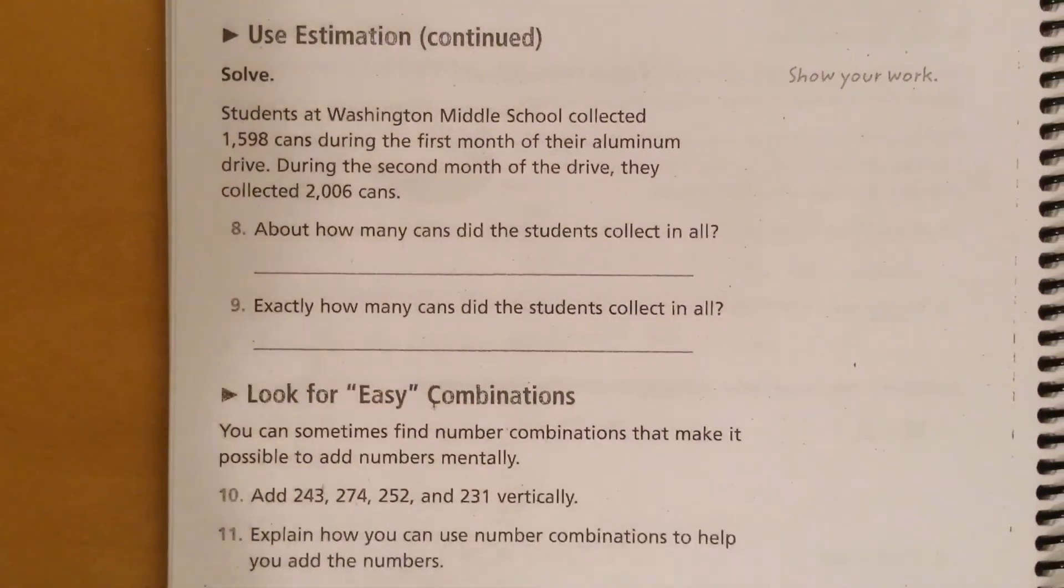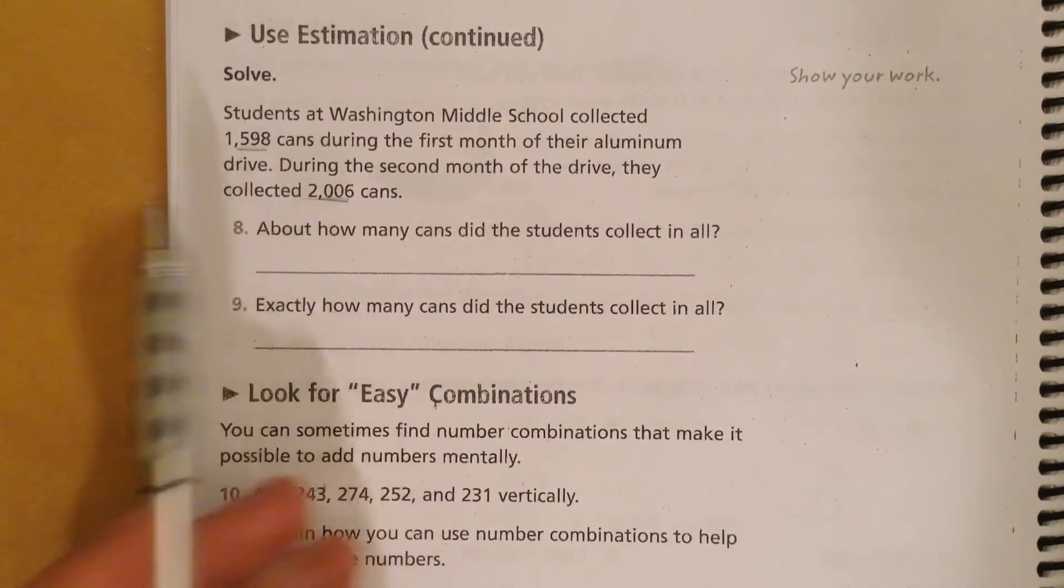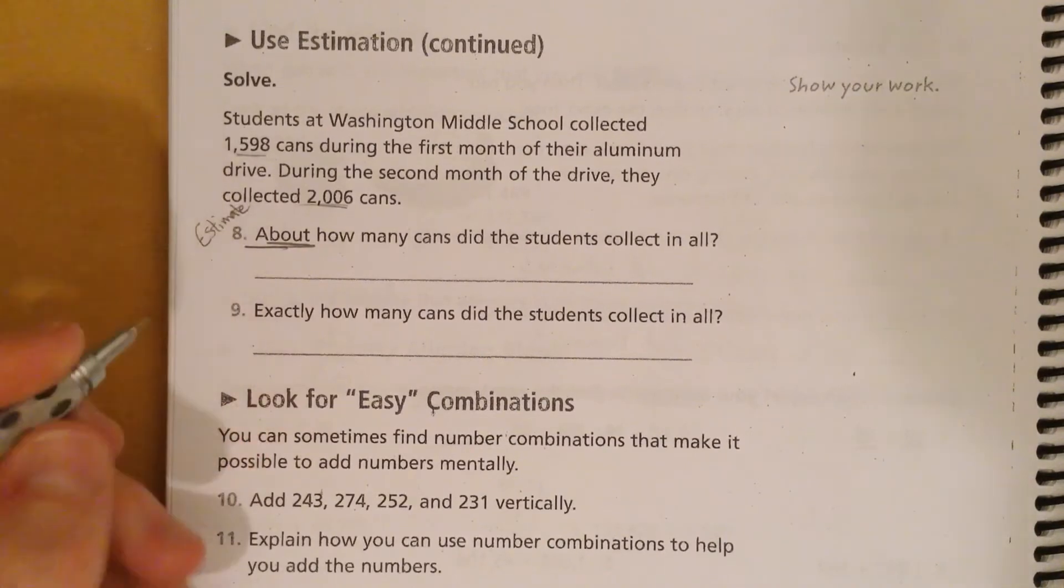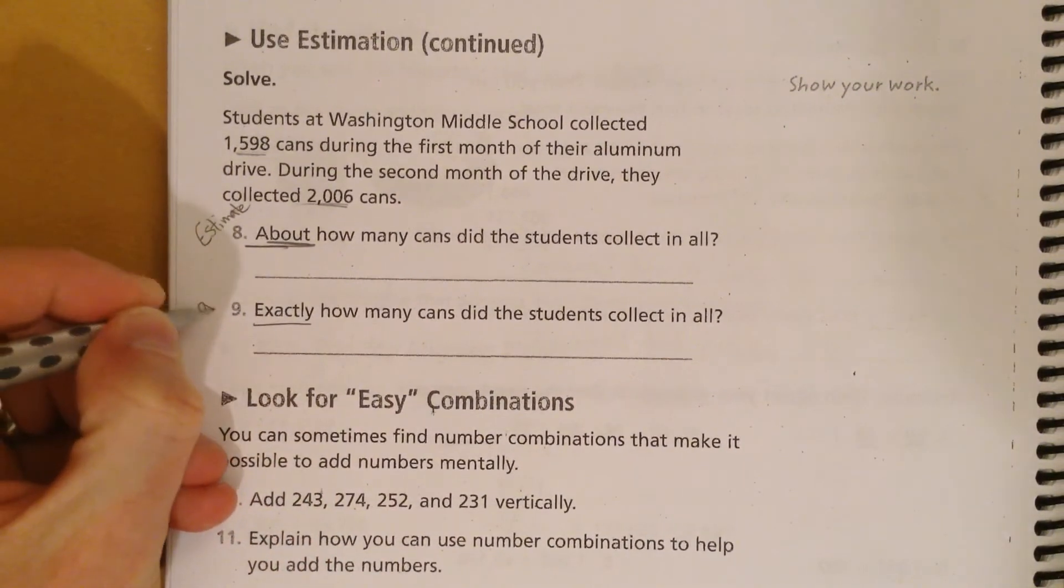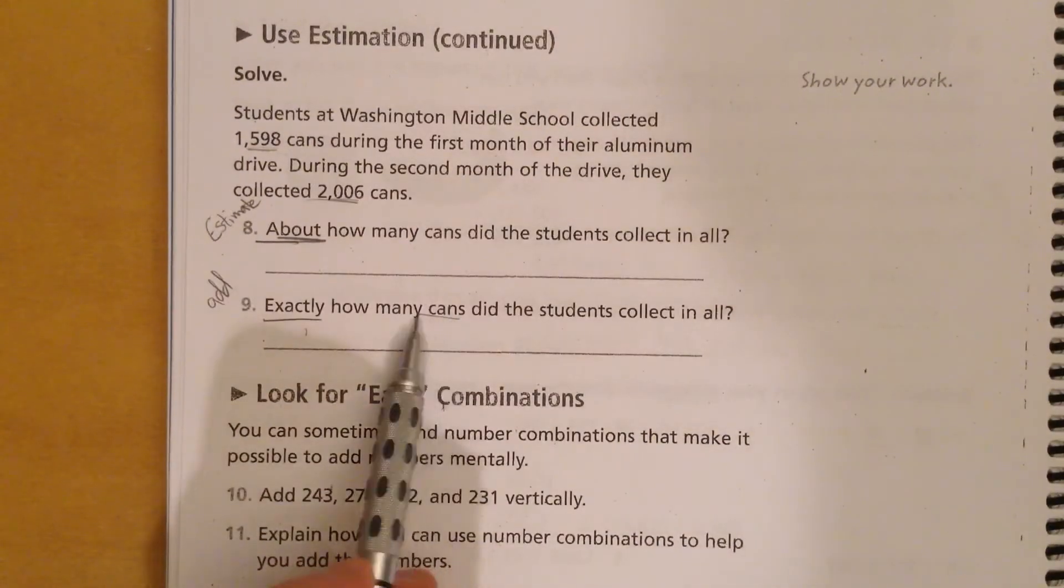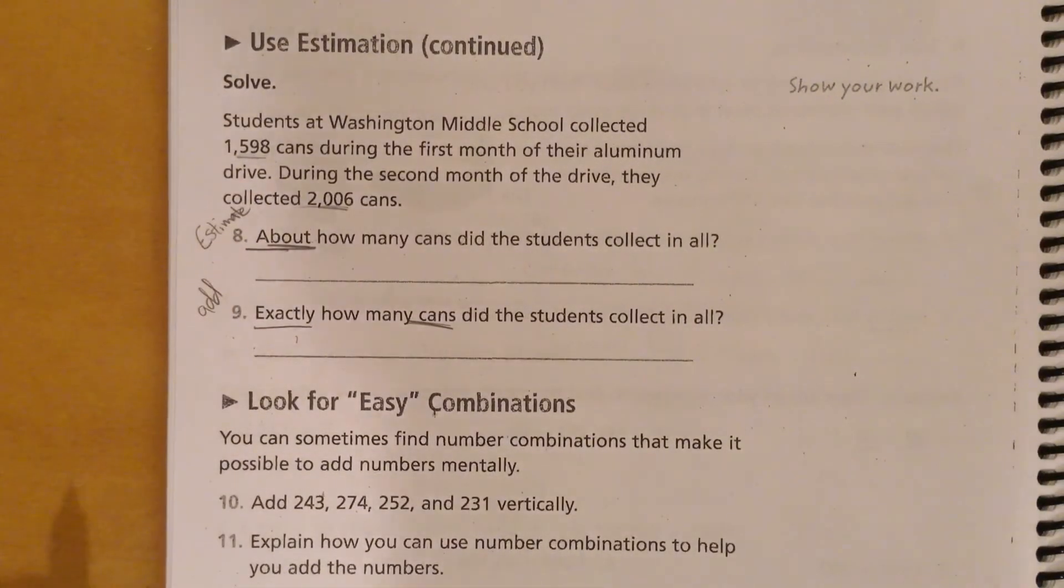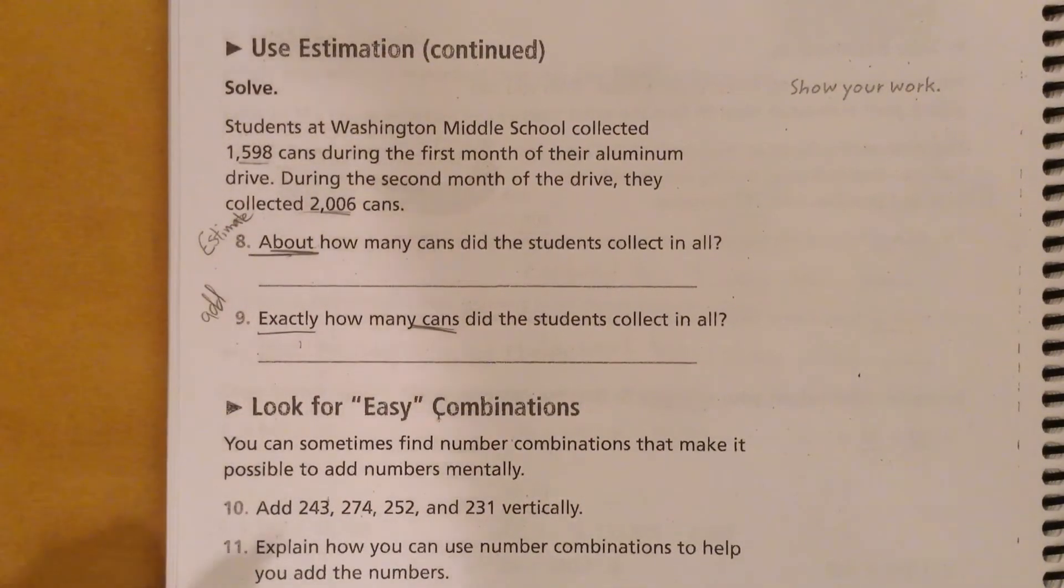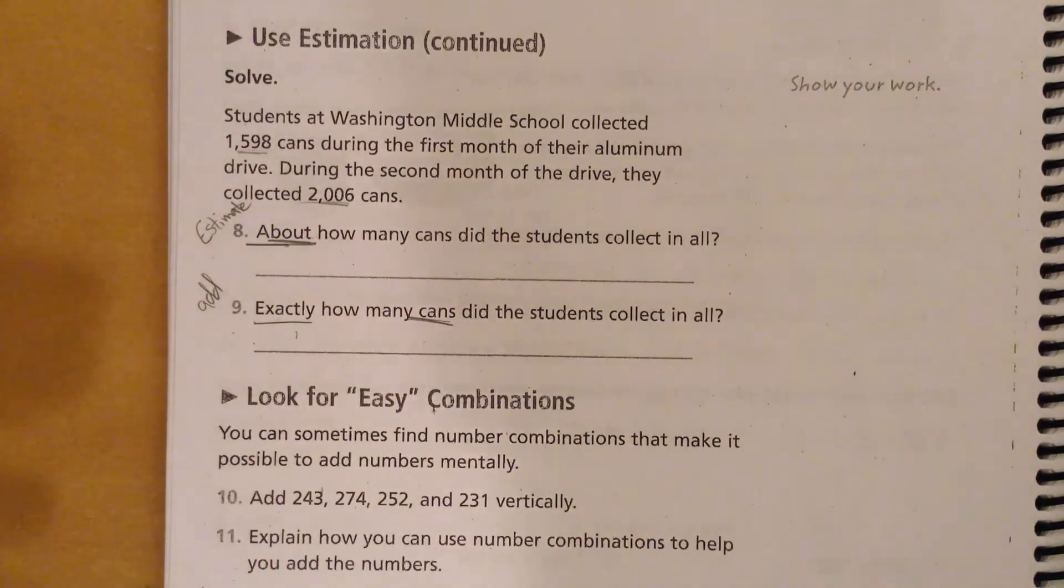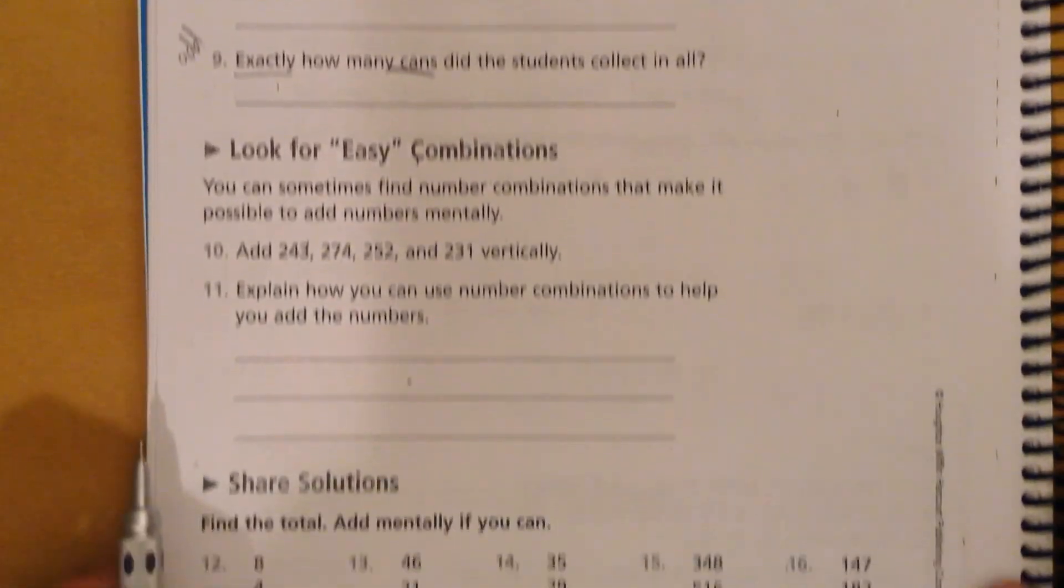Go ahead and flip over. So, this is all very similar. We're estimating the amount of cans. And so, it says about, which, remember, means that you need to estimate. And then, exactly, which means you actually add the numbers for real. Because they want to know exactly how many cans as opposed to about how many cans. So, I'd like you to go ahead and try that as well. And, once again, if you're having a hard time keeping up, that's what the pause button is for. You can also rewind if you need to. So, that should make it a little bit easier.